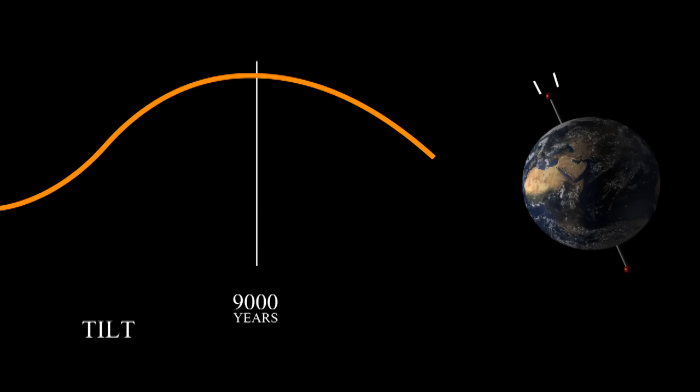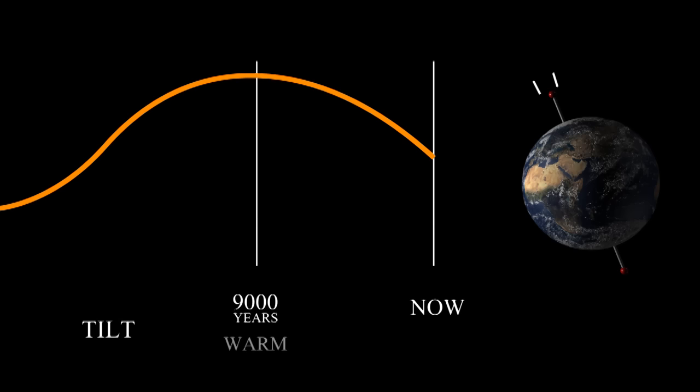Let's look at tilt. 9,000 years ago, the Earth's tilt was very high. It's gradually been dropping since then, so that now we're in a medium level of tilt. A high tilt predicts a warm climate; a medium tilt predicts a medium climate.